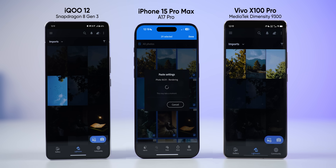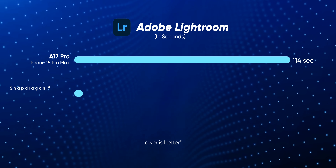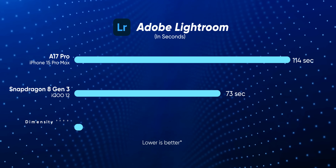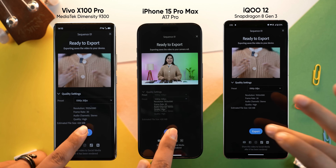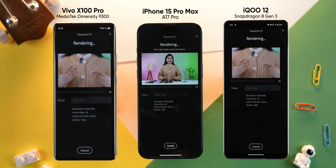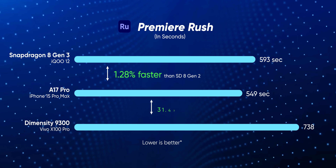To test what these premium processors are capable of beyond benchmarks, I fired up Adobe Lightroom and imported over 200 RAW photos to batch apply a custom preset. The A17 Pro completed this task the slowest at 1 minute and 54 seconds, while the Snapdragon 8 Gen 3 and the Dimensity 9300 were pretty much neck-and-neck. I ran the test again and got the same result. Since Lightroom is a famously CPU-heavy app and the A17 Pro has a powerful CPU, this could just be an optimization issue. In Premiere Rush, exporting a 4K video to 1080p, the iPhone 15 Pro Max was indeed faster — not by much versus the iQOO 12, but by over 31% against the Vivo X100 Pro.